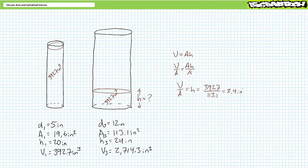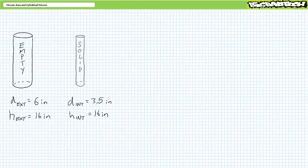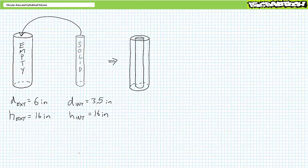Here's another application of the cylindrical volume formula. Consider an empty cylinder with a diameter of 6 inches and a height of 16 inches. Consider another smaller cylinder composed of solid steel with a diameter of 3.5 inches and also a height of 16 inches. Take the smaller solid steel cylinder and put it inside the larger empty cylinder. What's the volume of the remaining tube-like space? This is kind of like the 3D version of the ring area problem. First, determine the volume of the larger exterior cylinder, then determine the volume of the smaller interior cylinder, and subtract the interior from the exterior. Volume of the tube equals exterior minus interior.